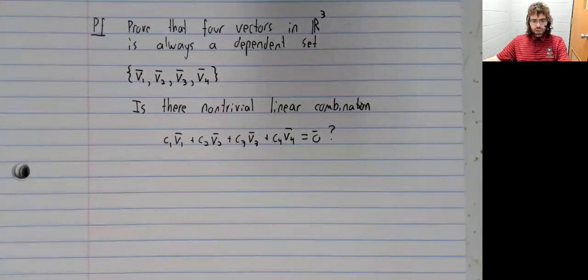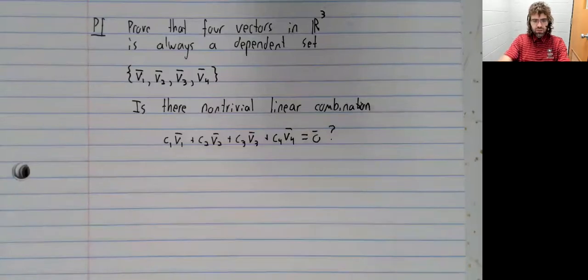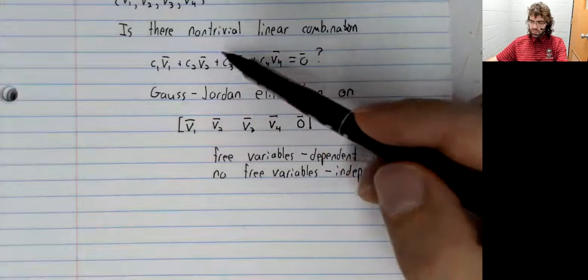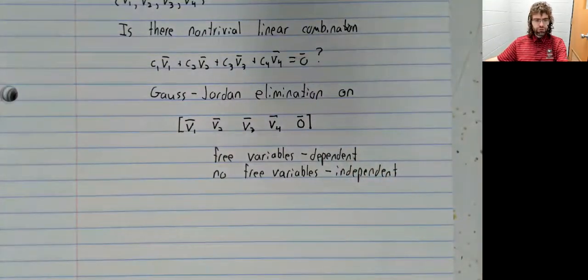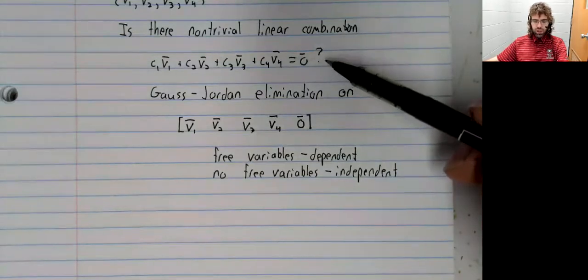Well, we know how to investigate equations like this. We should set up an augmented matrix and perform Gauss Jordan elimination. Doing so will allow us to decide which of these variables, if any, are free. If there are any free variables, this has infinitely many solutions and the vectors are dependent.